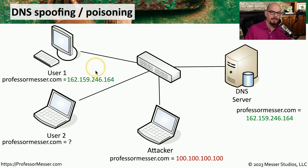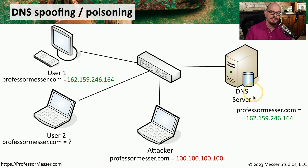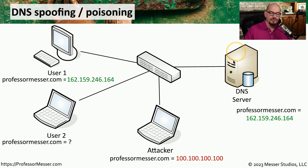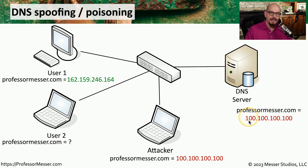User 1 fills in that information in their cache and can continue connecting to professormesser.com using the IP address discovered during the resolution process with the legitimate DNS server. Now let's say an attacker on the network has somehow gained access to the device containing the DNS server — perhaps by identifying a known vulnerability to gain access to the operating system, or by obtaining administrative credentials. In either case, the attacker can connect directly to the DNS server and modify its configuration, so that instead of pointing to the .164 address for professormesser.com, the new IP address for professormesser.com is now 100.100.100.100, the attacker's address.